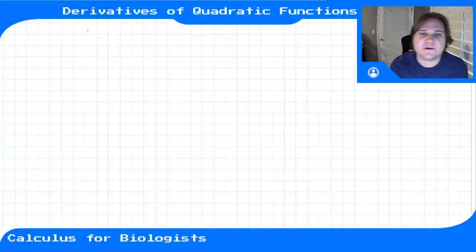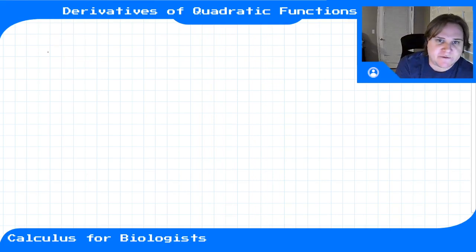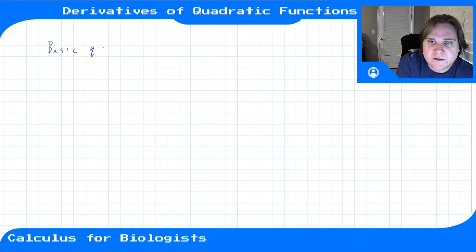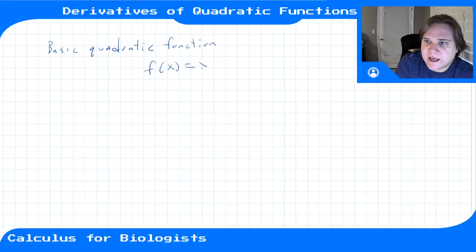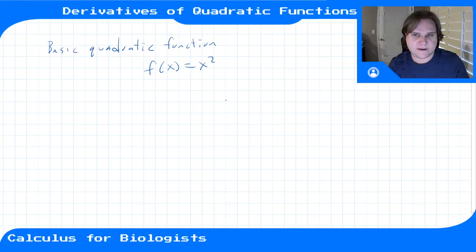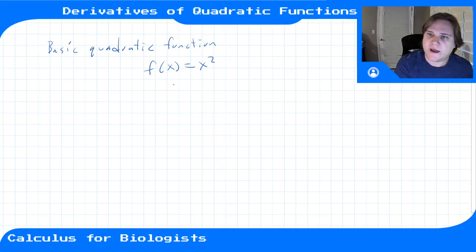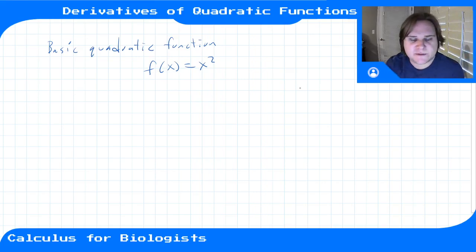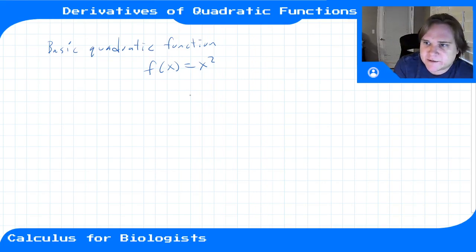Another type of function we can compute the derivative for are quadratic functions. The most basic quadratic function we can have is f(x) = x². The more complicated ones throw in linear terms, constants, and some scalars. Let's just start with this basic one.